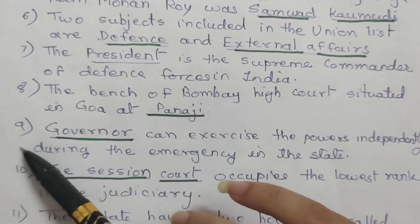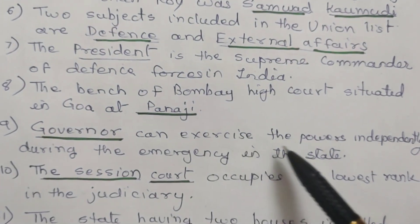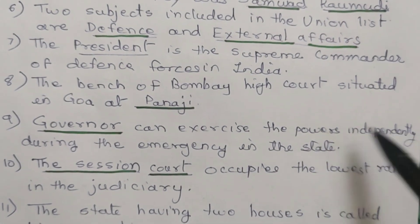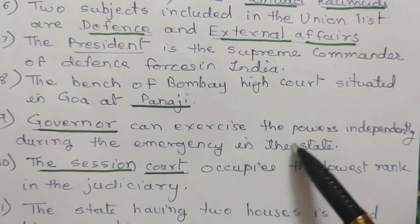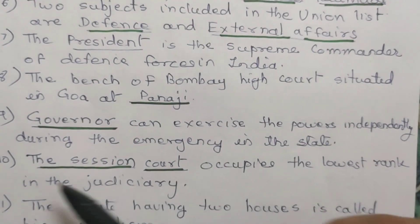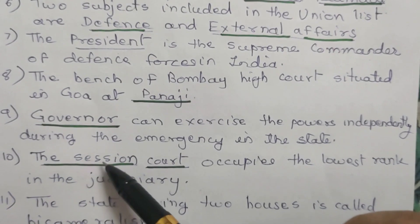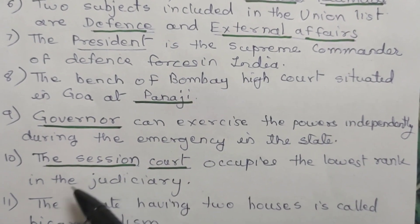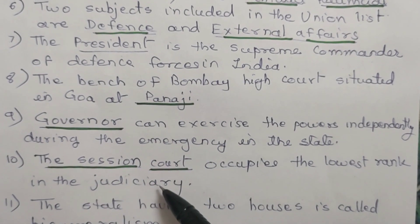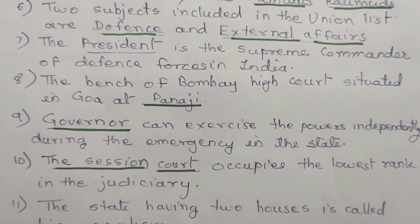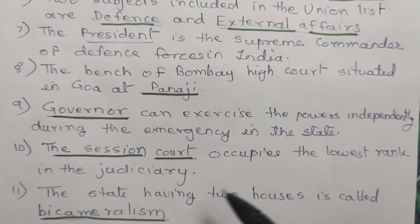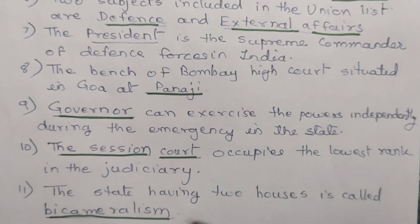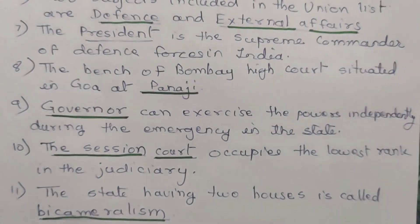9. The Governor can exercise powers independently during emergency in the state. 10. The Sessions Court occupies the lowest rank in the judiciary. 11. The state having two houses is called bicameralism.